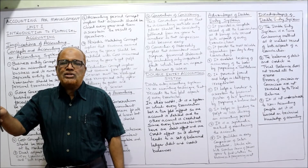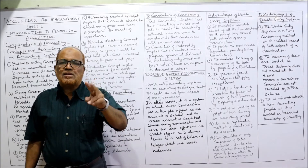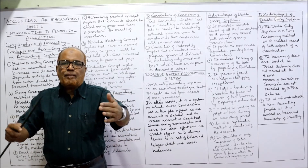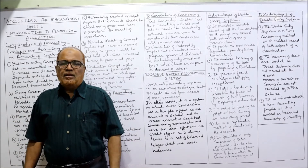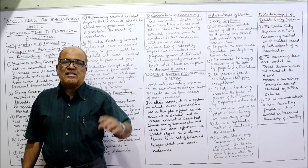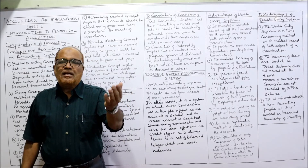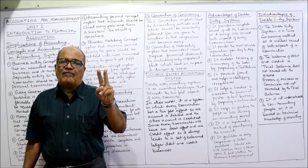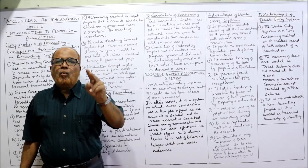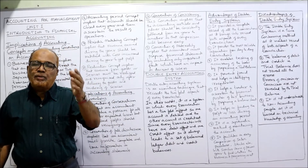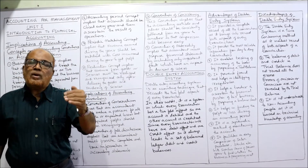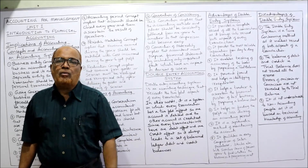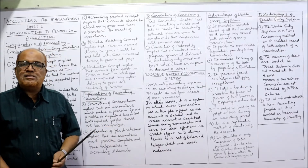For example, when a business sells goods, goods are going out and cash is coming in — two aspects. Similarly, when salaries are paid to employees, the business is paying the salary and receiving the services of the employees. So every transaction has a two-fold effect. That is why one account is debited and the other account is credited with an equal amount — that is called the double entry system.